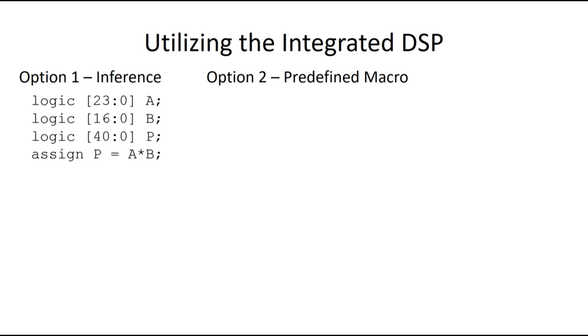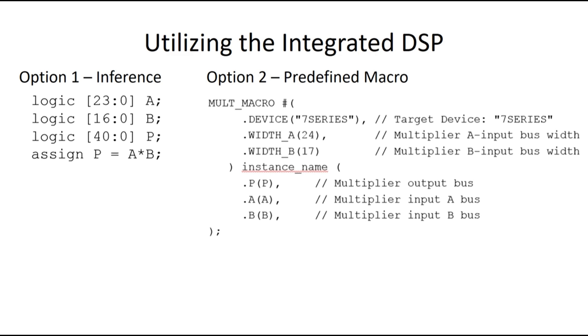A second option is to use a predefined macro so that you definitely make use of a DSP block. One example of this is there is a macro already in place that performs a multiplication of two inputs and produces an output from them.